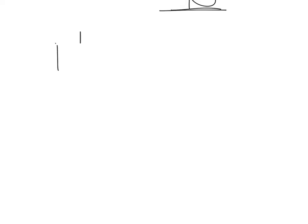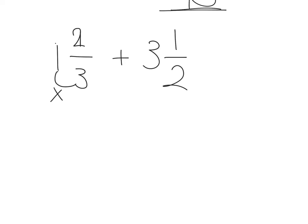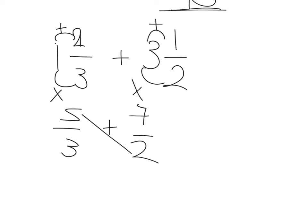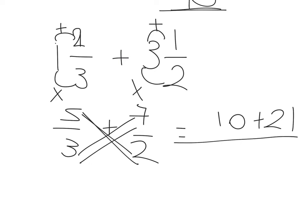Next one, we've got another addition: 1 and 2 thirds plus 3 and a half. So 3 times 1 is 3 plus 2 is 5, that's 5 over 3. Plus 2 times 3 is 6 plus 1 is 7, so 7 over 2. Kiss and smile: 5 times 2 is 10 plus 7 times 3 is 21, over 3 times 2 is 6. That's 31 over 6, which can't be simplified.